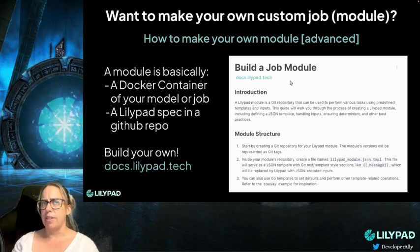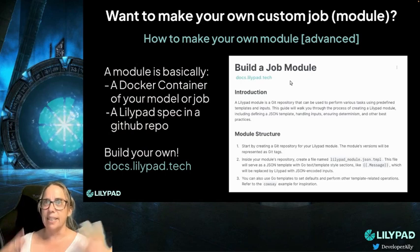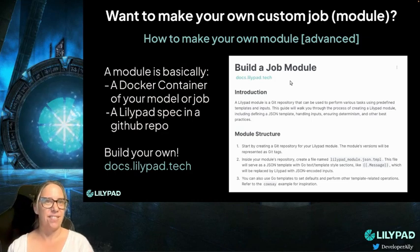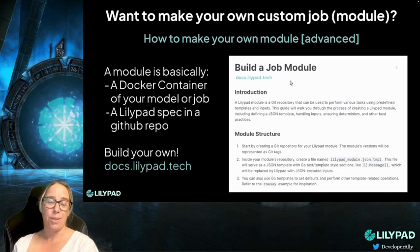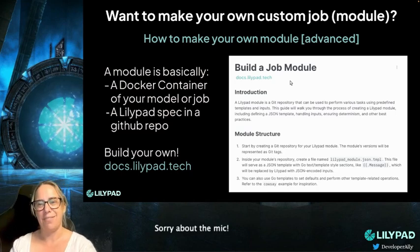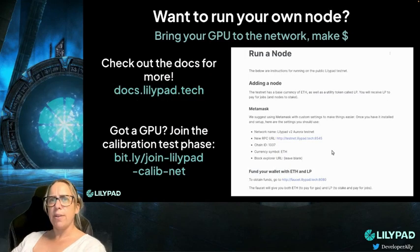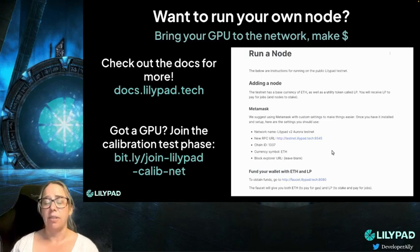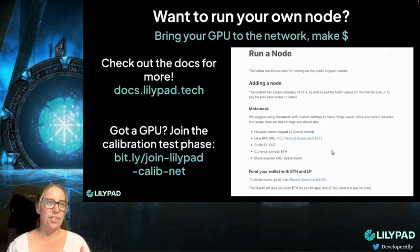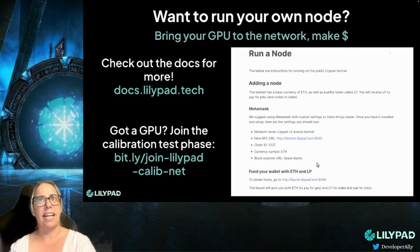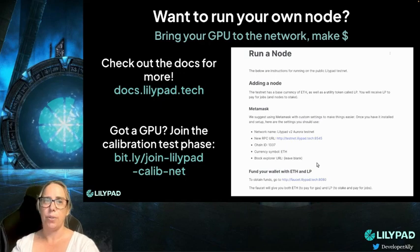What if we don't have the model or the compute job that you want to run on Lilypad? This is where you can make your own. This is kind of an advanced thing to do at the moment, so if you're a dev that likes a challenge, we would love to see some more modules on Lilypad. Have a go at making your own module and submitting it to Lilypad for the benefit of everyone. What if you want to run your own node or contribute GPU or CPU resources to the network? You can do that as well. We're also going to be running a calibration test phase and an incentivized testnet in 2024, so check out the link if you are a GPU provider interested in adding your node to the network.